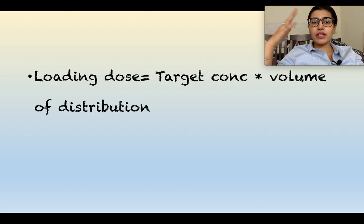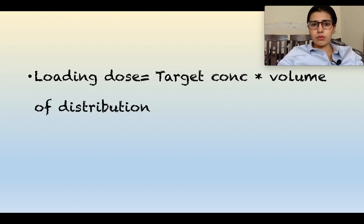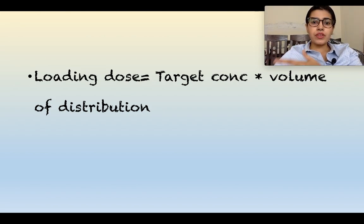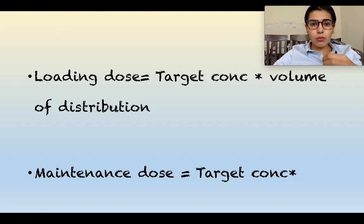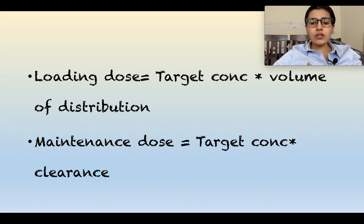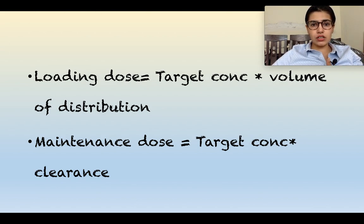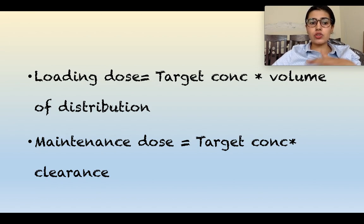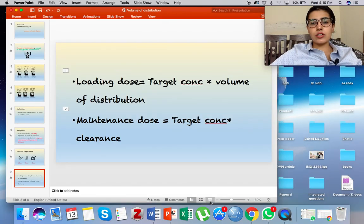There is also a term called maintenance dose. Maintenance dose has nothing to do with volume of distribution. A drug given to a patient will eventually be cleared from the body, so the maintenance dose replenishes the drug that has been removed. The formula is: Maintenance dose = target concentration × clearance, where clearance is the amount of drug cleared per unit time. Loading dose relates to volume of distribution; maintenance dose relates to clearance.